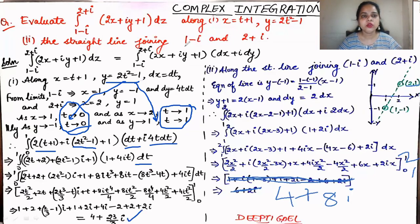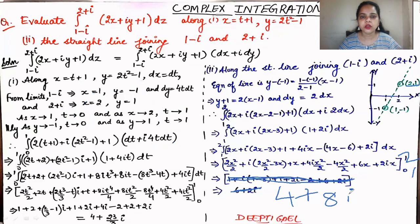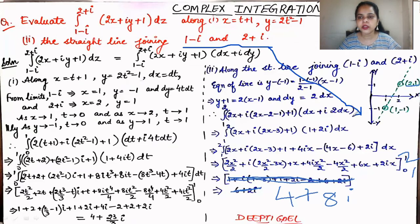The second part asks us to integrate the same integral over the straight line joining 1 - i and 2 + i. To integrate over this line, we need the equation of the line. Using the two-point form, the coordinates are (1, -1) for 1 - i and (2, 1) for 2 + i, and we join them by a straight line.